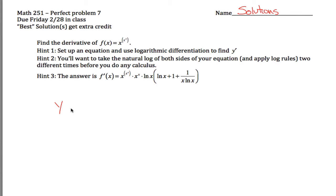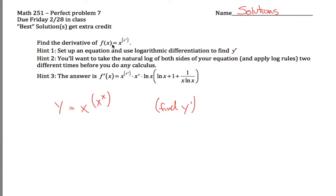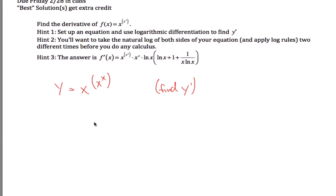What I'm getting at is: set up an equation where y is equal to the thing you want to take the derivative of — f(x) in this case. If we can just find y prime, we'd be done. This is y, this function right here. I want the derivative, so find y prime. The problem is I can't just take the derivative of both sides because I don't know what the derivative of the right-hand side is — that's what I'm being asked to figure out.